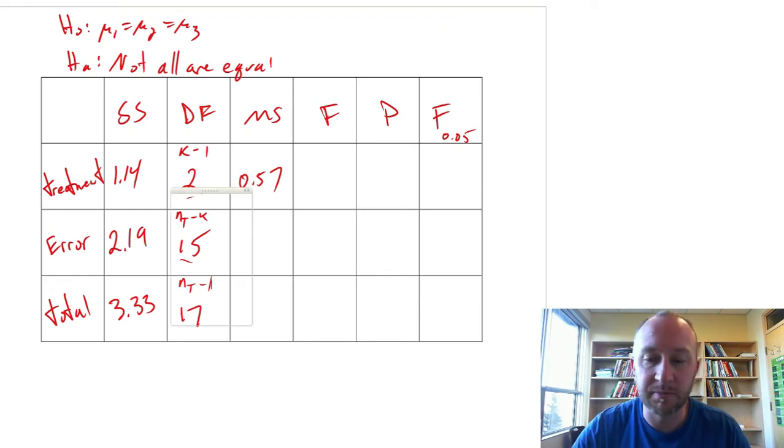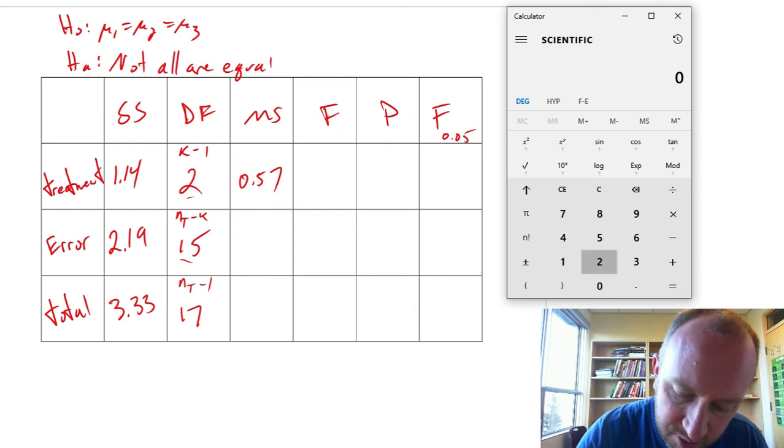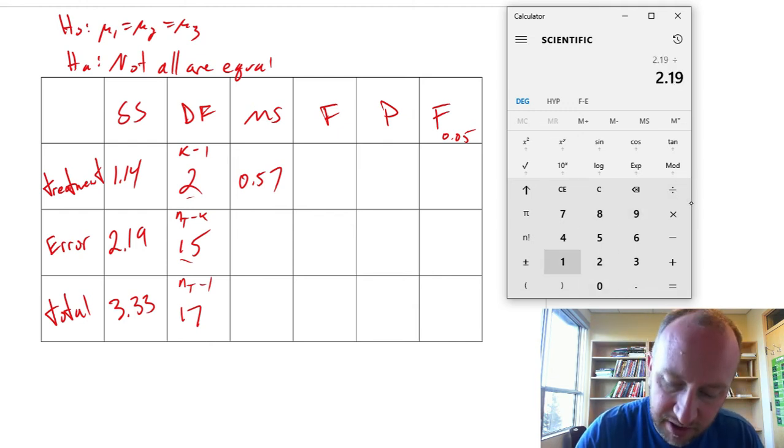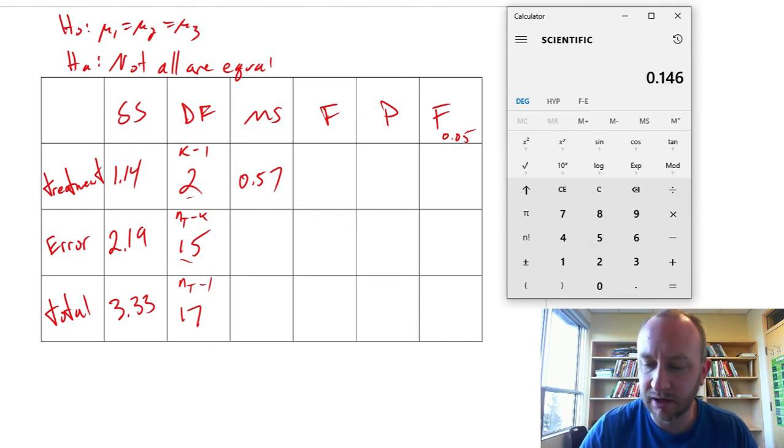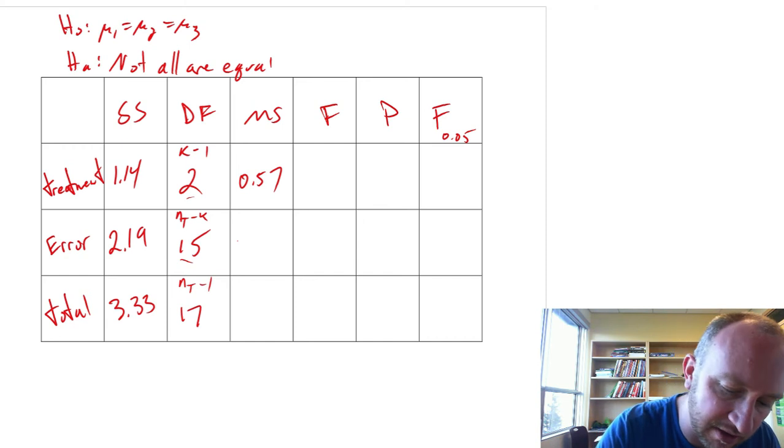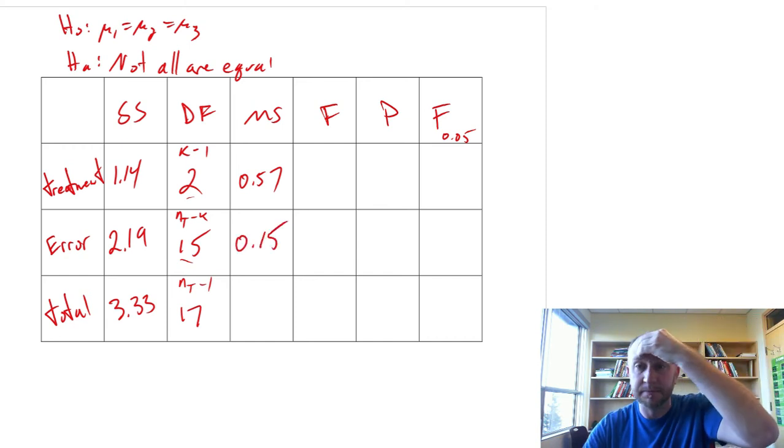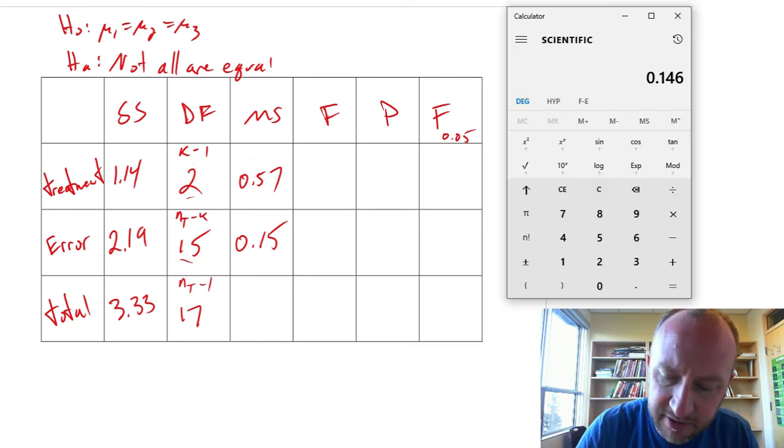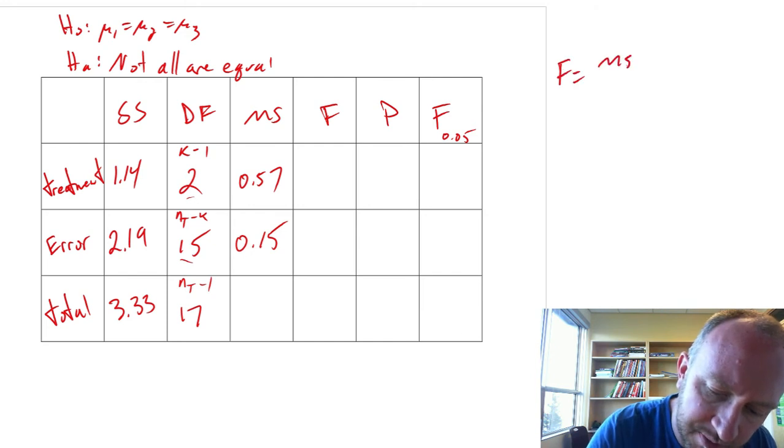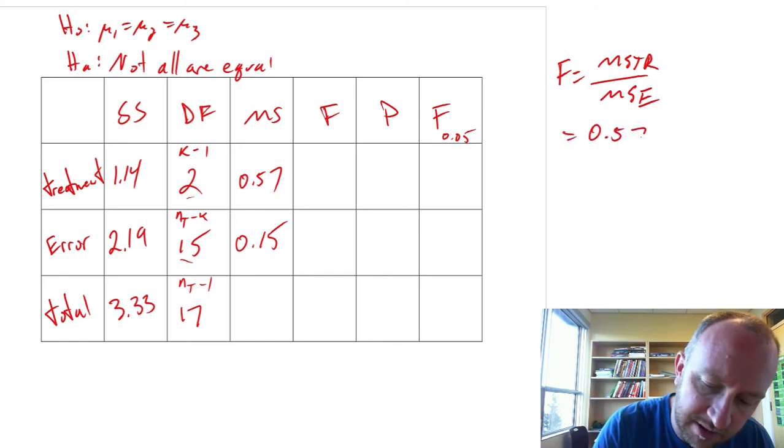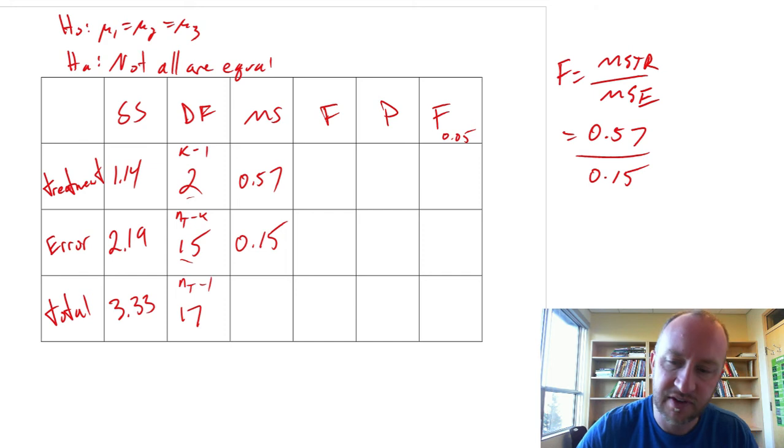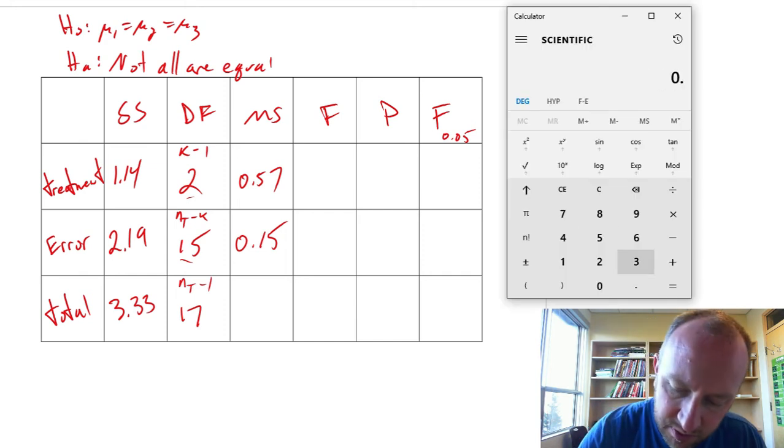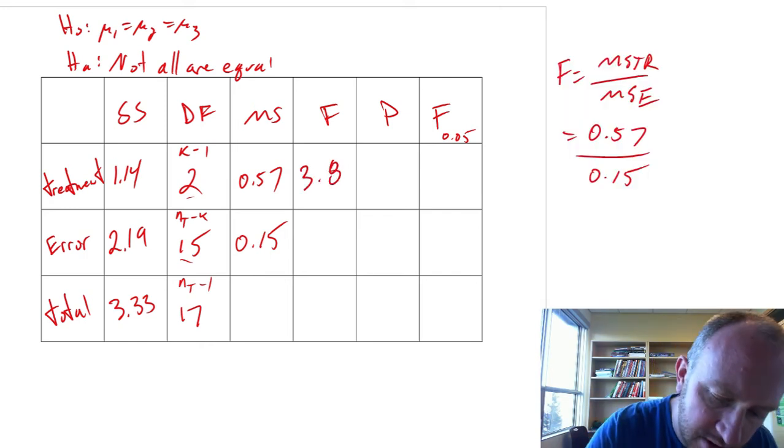Now we want mean squared error. So I'm going to take 2.19, SSE divided by 15 degrees of freedom, 0.15. We're almost there. F-statistic. This is always MSTR divided by MSE. So for us this is going to be 0.57 divided by 0.15. So 0.57 divided by 0.15 is 3.8.